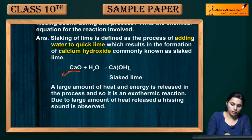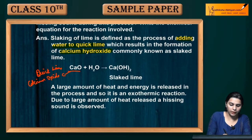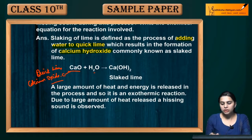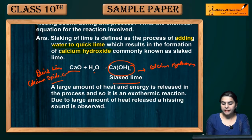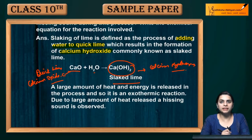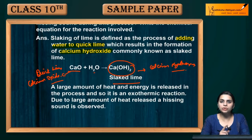Quick lime — CaO, calcium oxide — is your starting material. When you add water to it, the product you obtain is slaked lime, which is calcium hydroxide, Ca(OH)₂. Slaked lime is also used for carbon dioxide detection; when CO₂ is passed through slaked lime, the solution turns milky.